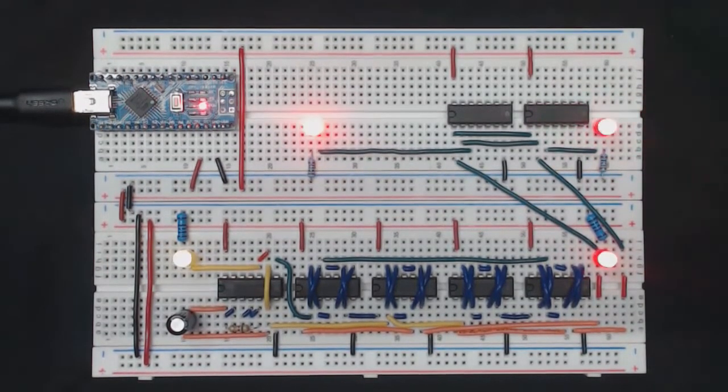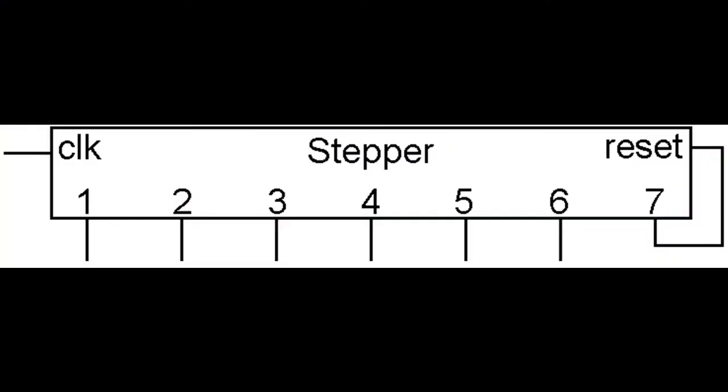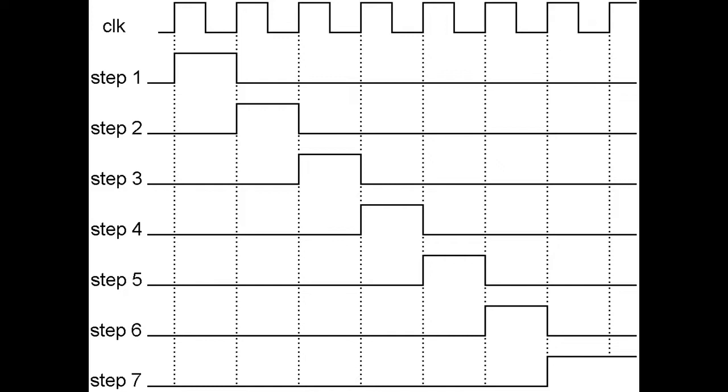Today we're introducing a new part called the stepper. Conceptually, the stepper has one input which is the clock signal coming out of our clock and it has six outputs which are six distinct signals that will represent six possible steps. The idea is to take the clock signal, an infinite sequence of zeros and ones, and break it up into chunks of six steps.